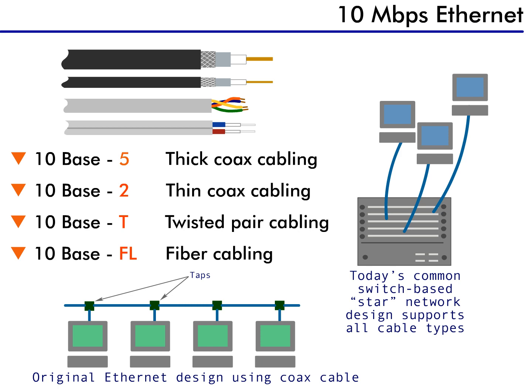The first Ethernet networks were designed using only coax cable. Today, though, Ethernet can be supported on coax, twisted pair, or fiber cabling, because switched-based networks support all these types of cables. In the following lessons, we'll learn about how the bandwidth levels supported by Ethernet continue to increase as the protocol evolves.